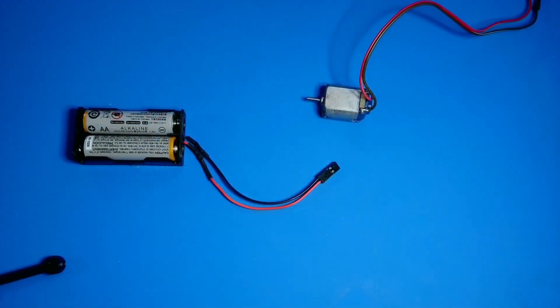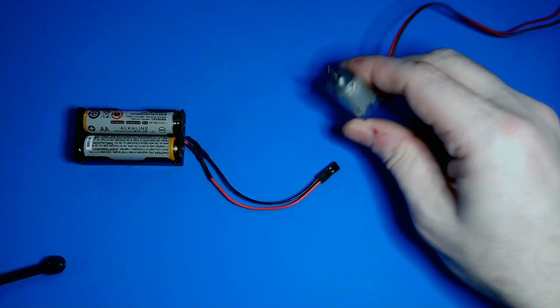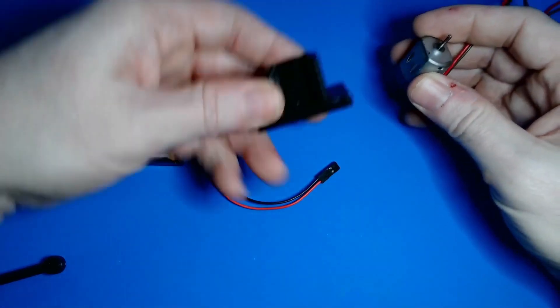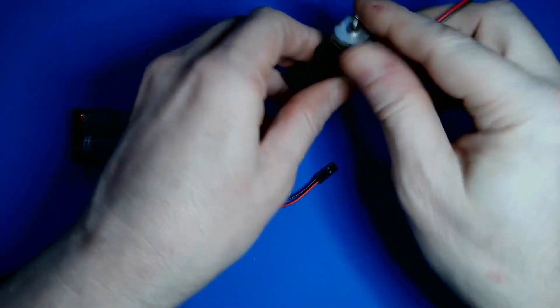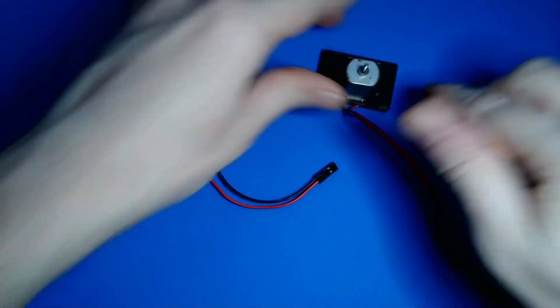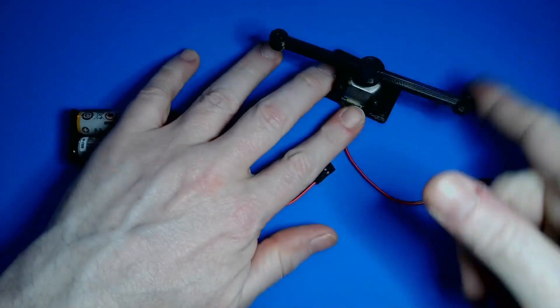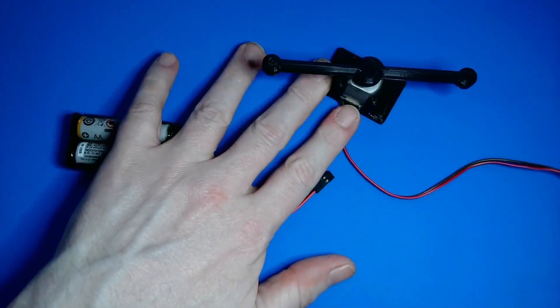To show the relay in action, I could use an AC device like a light bulb, but for safety reasons, I'll use a small DC motor instead. Please don't try this with AC current unless you know what you're doing. I'll power my motor with this battery pack, and I'll mount the motor in this little bushing I've 3D printed. To make the spinning of the motor visible on camera, I'll attach this little 3D printed spinner to the motor shaft.